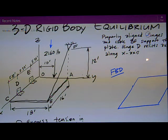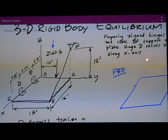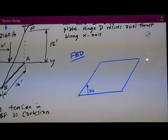So the first thing in any of these problems is to do a free body diagram. I need to reflect the forces at hinges D and E. Remember D resists thrust along the X-axis. So in my free body diagram, I'm going to reflect that one, D is having all three forces: DZ, DY, DX.